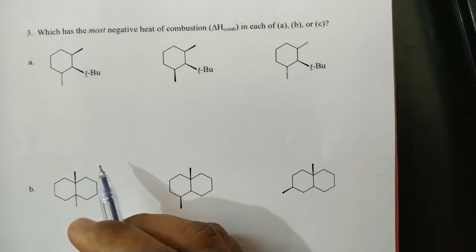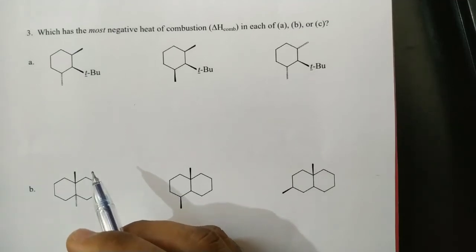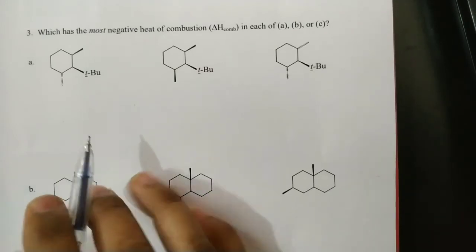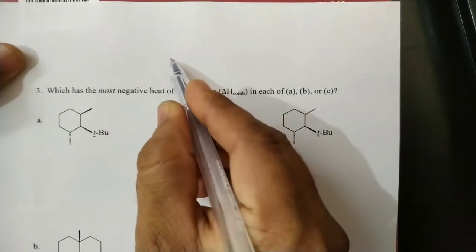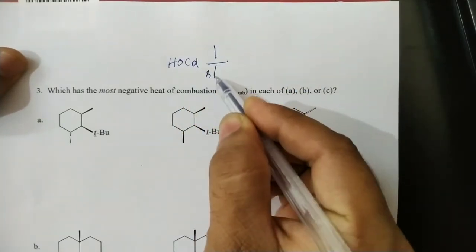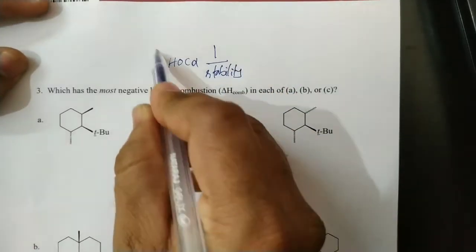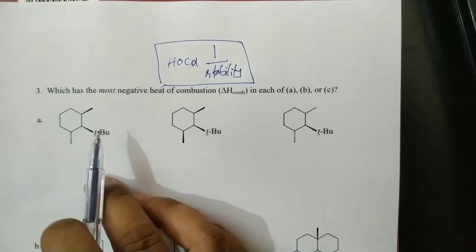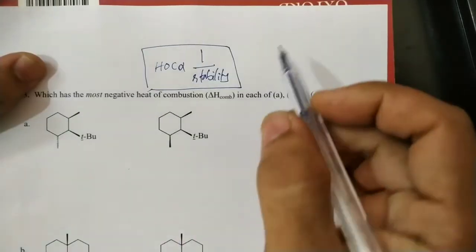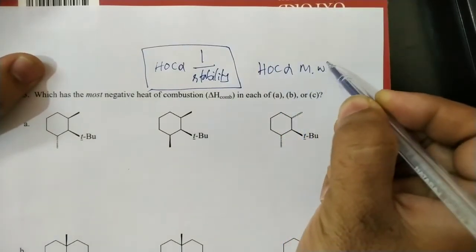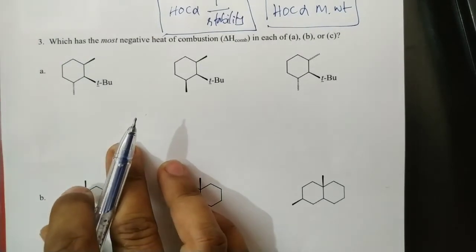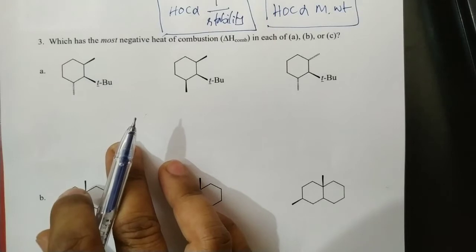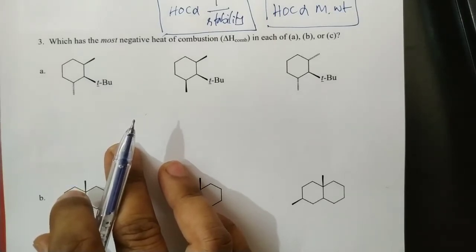Hello students. In this video I discuss some more questions from Alkanes which are useful for JEE Advanced and Mains exams. The first question is based on heat of combustion. Heat of combustion is inversely proportional to stability for isomeric compounds — same molecular formula but different isomers. In general, heat of combustion is directly proportional to molecular weight, but here all compounds have the same molecular formula and molecular weight.